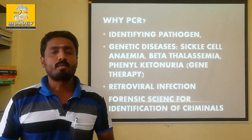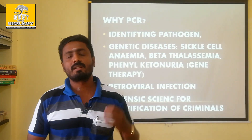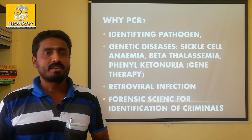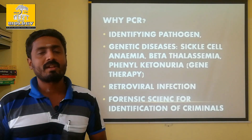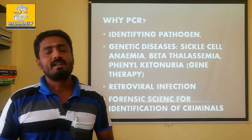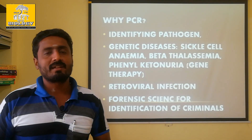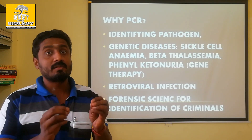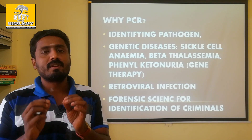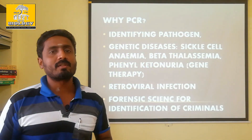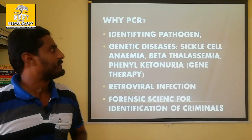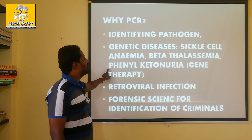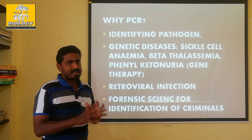The genes involved in genetic disorders are inherited from parents across generations. Genetically controlled diseases — those inherited through chromosomes — can be identified using PCR. For example, sickle cell anemia, beta-thalassemia, and phenylketonuria are conditions we can detect using this technique, even in difficult situations.